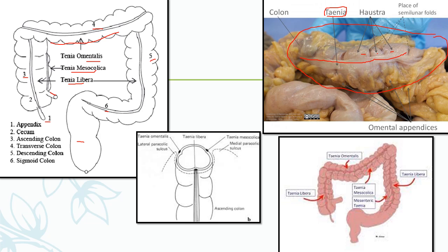Another diagram shows a cut section of the ascending colon. Anteriorly we have the teniae libera, posterior medially we have the teniae mesocolica next to the medial paracolic sulcus, and posterior laterally we have the teniae omentalis next to the lateral paracolic sulcus. This diagram again shows the teniae libera, the teniae omentalis, the teniae mesocolica, and similar positions in the descending colon as well.